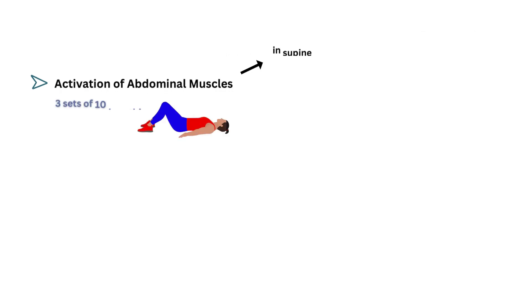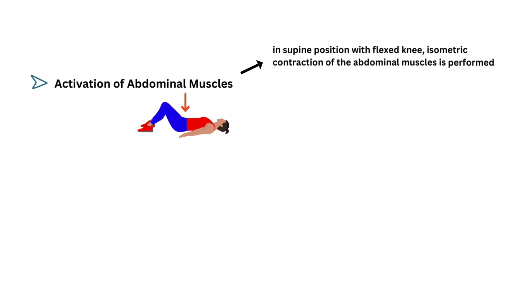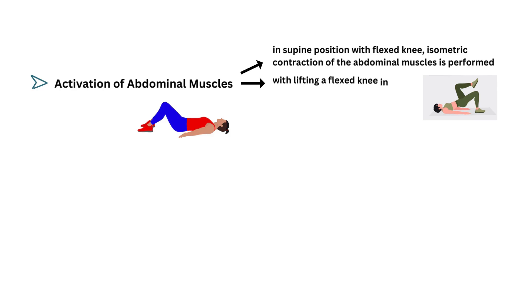Activation of Abdominal Muscles — in supine position with flexed knees, isometric contraction of the abdominal muscles is performed during breathing. The same exercise is performed but with lifting a flexed knee in the air and maintaining it steady.